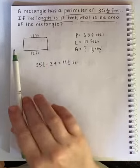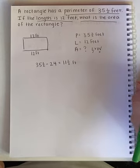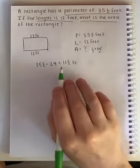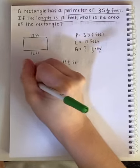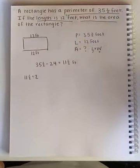Well I have the total of the two sides. I know that there are two of them, so to find out what one of them are I could divide. Divide by 2. So I'm going to take this 11 and a half and I'm going to divide it by 2.